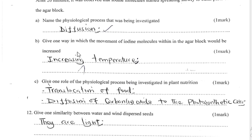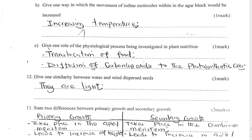Part B: One way to increase the movement of iodine molecules within the agar block is by increasing temperature. Part C: One role of diffusion in plant nutrition is the translocation of food from leaves to other parts of the plant, and the diffusion of carbon dioxide to the photosynthetic cells.